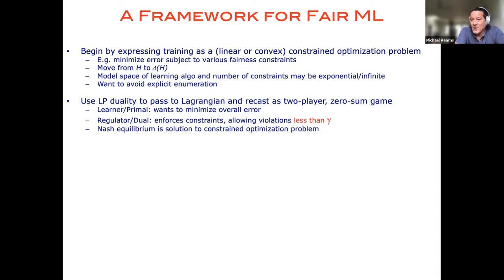And so once we set it up as a constrained optimization problem over this kind of heinously large model space and constraint space, we're going to use classic linear programming duality to pass to the Lagrangian and recast this as a two-player zero-sum game. And so it'll be helpful going forward to think of the primal player as the learner who generally wants to minimize the overall error of the model, regardless of the fairness constraints.